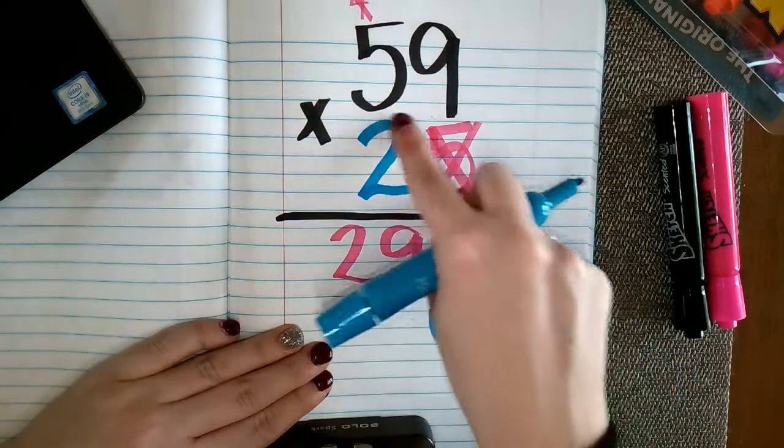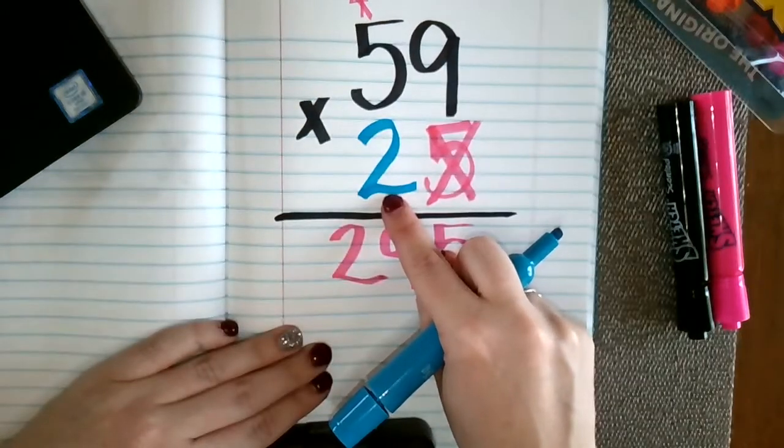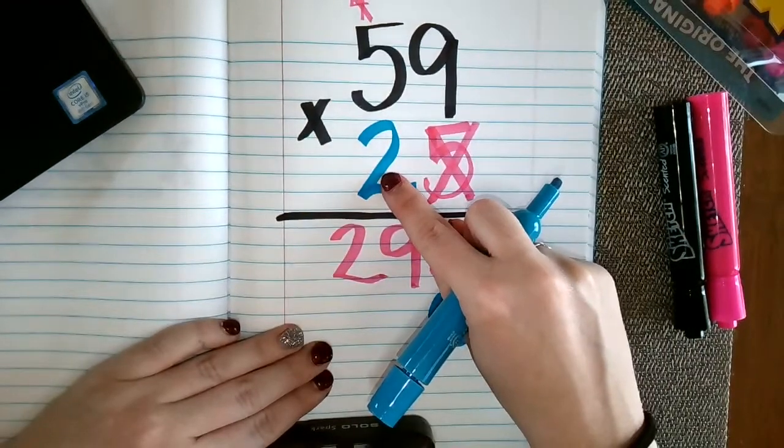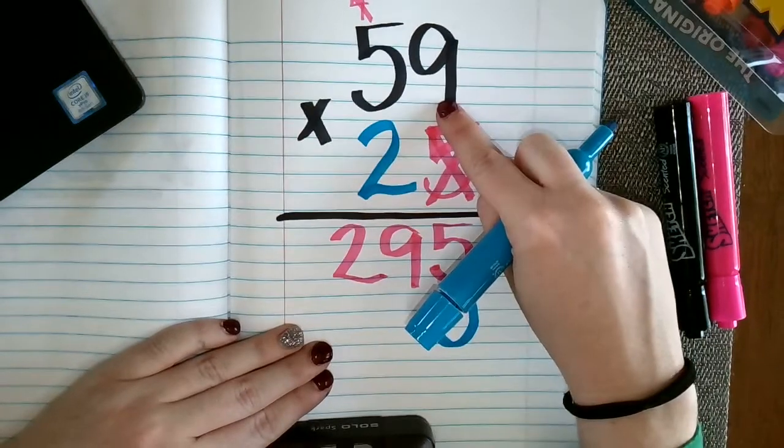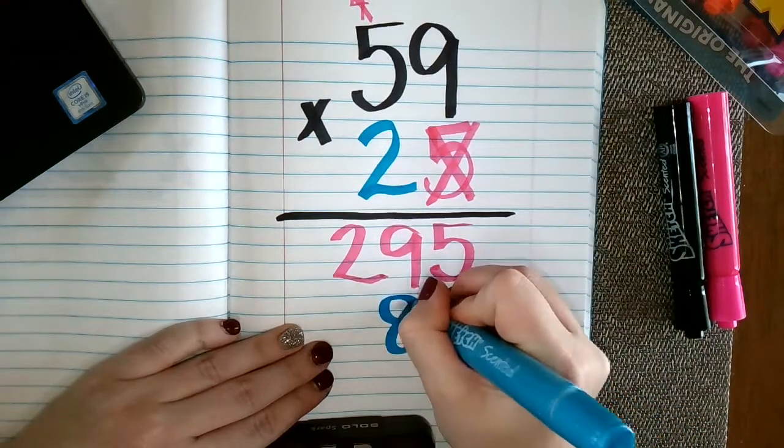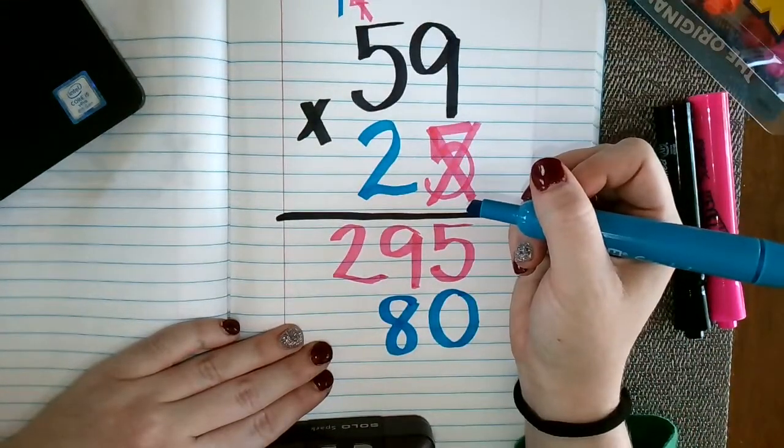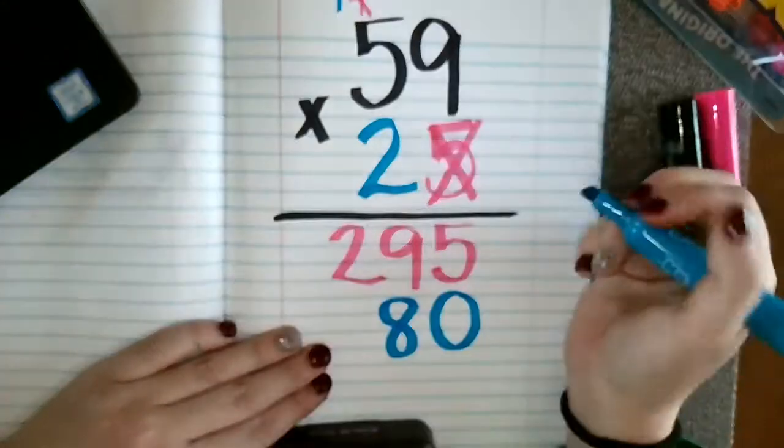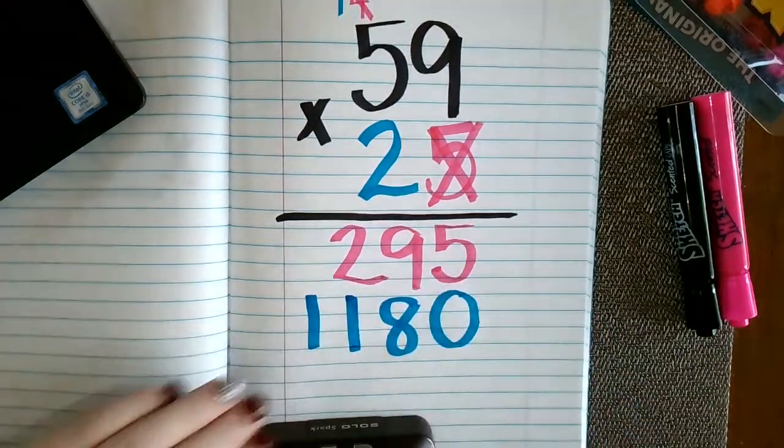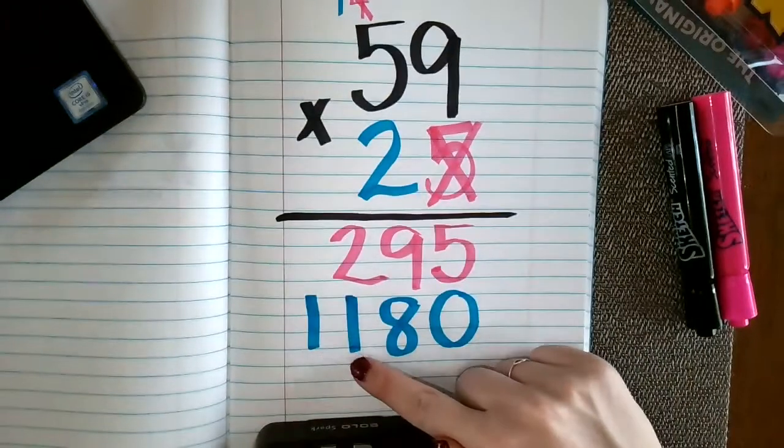Because how we're going to look at this number now is 59 times 20. That 2 is in the tens place, which means the 2 has a value of 20. So we are going to take our 2. We're going to multiply it by the smallest place value on the top, which is the 9. 2 times 9 is 18. So I'm going to put my 8 down and carry that 1, carry that value of 10. 2 times 5 is 10, plus 1 is 11. So in other words, 59 twenty times is 1,180.